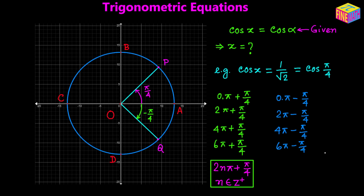Here again we are seeing another pattern. The pattern is that the angle is actually an even multiple of pi minus pi over 4. So one of the solutions is an even multiple of pi plus pi over 4, and here we are seeing another solution for x which is an even multiple of pi minus pi over 4.